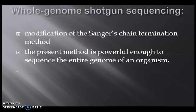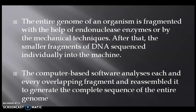Another modification of Sanger's chain termination method is whole genome shotgun sequencing. Instead of a single gene or few base pairs, this method is powerful enough to sequence the entire genome of an organism. The principle is the same as Sanger's method, but one additional step of DNA fragmentation allows reading of multiple fragments. The entire genome is fragmented with the help of endonuclease enzymes or by mechanical techniques, producing smaller fragments which are sequenced individually. Computer-based software then analyzes each overlapping fragment and reassembles them to generate the complete sequence of the entire genome.